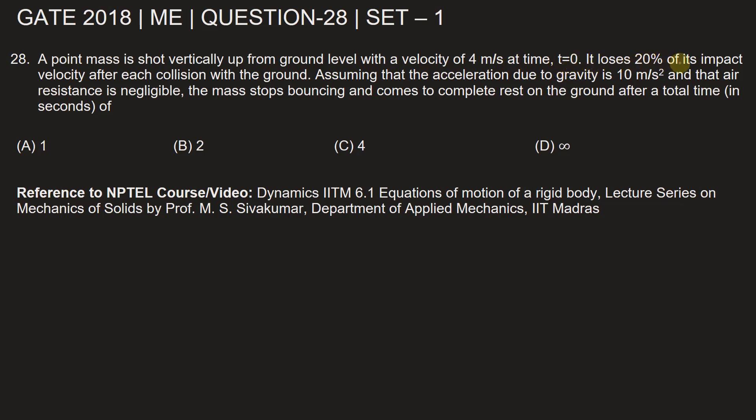It loses 20% of its impact velocity after each collision with the ground. Assuming that the acceleration due to gravity is 10 meters per second squared and that air resistance is negligible.